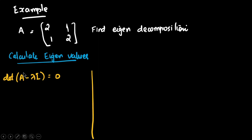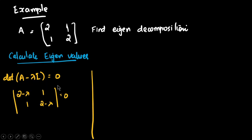Using the eigen equation, we arrive at the statement: determinant of A minus lambda times I equals 0. Substituting, we get the determinant of [2−λ, 1; 1, 2−λ] equals 0. This reduces to (2−λ)² − 1 = 0.